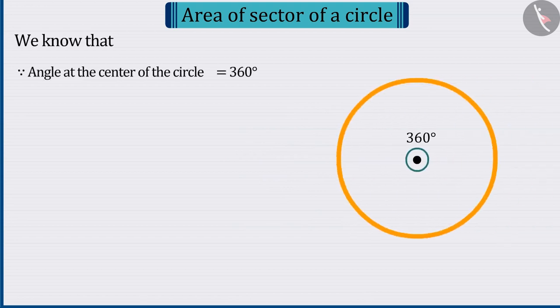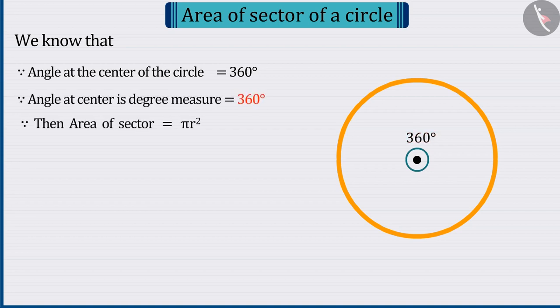Now we know that at the centre of the circle, the sum of the total angles is 360 degrees, so its degree measure is 360. Hence, the area of the circle can be considered as a sector whose area is Pi R square.